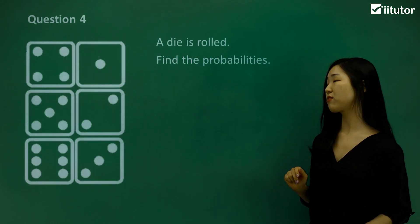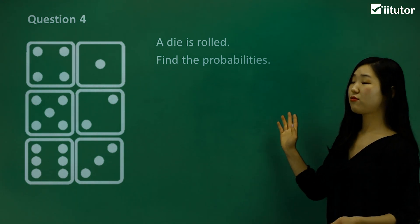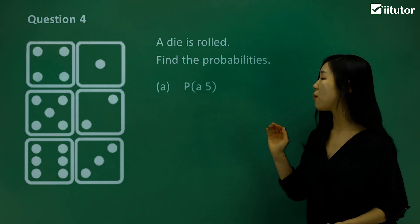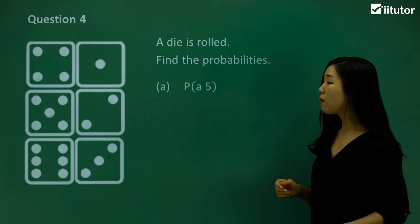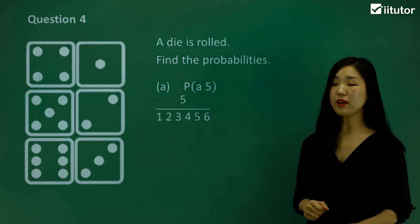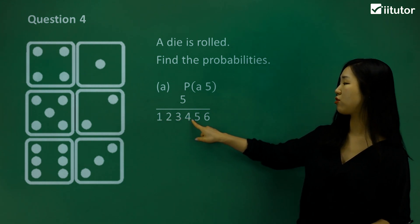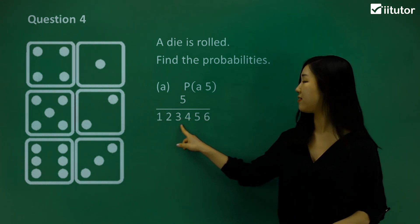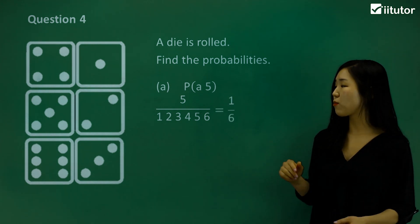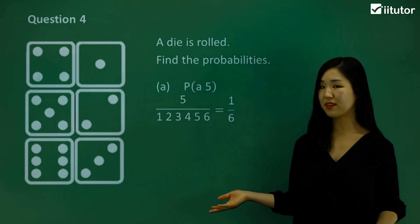Let's go straight to question 4. We've got a die here — a die is rolled. We're going to start with the probability of a 5. The probability of 5 is just this one outcome. 5 is just 1 out of all the outcomes of 1, 2, 3, 4, 5, and 6 — that's 6 outcomes. So it's 1 out of 6. That's the probability of being a 5.